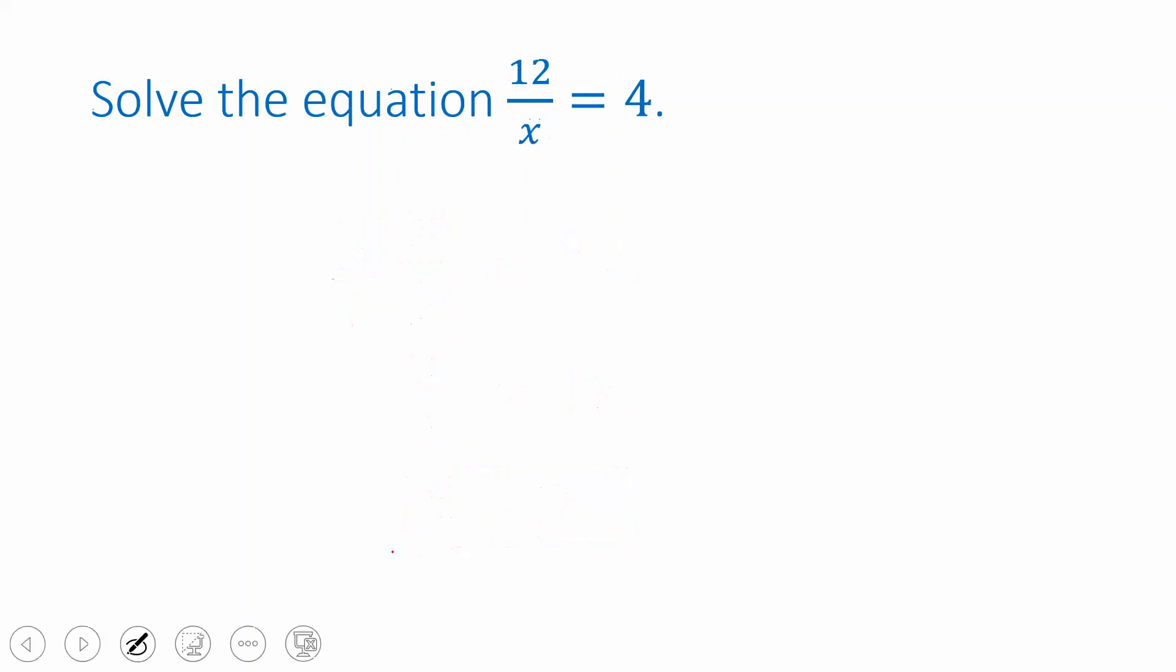So I wanted to start with that because now we can see how we're going to approach an equation like this, where you have a variable in the denominator. It's going to be almost exactly the same. So if I start with 12 divided by x equals 4, and I want to isolate the x.